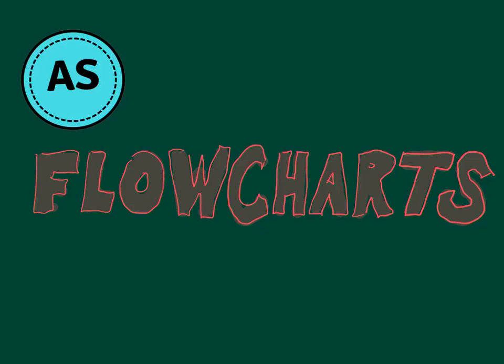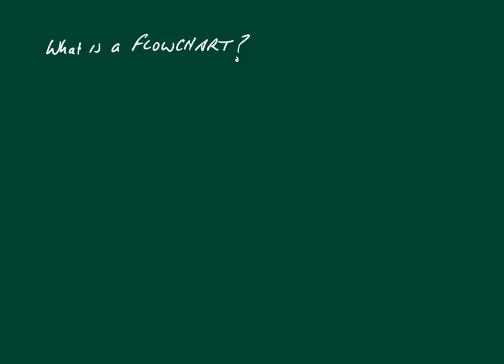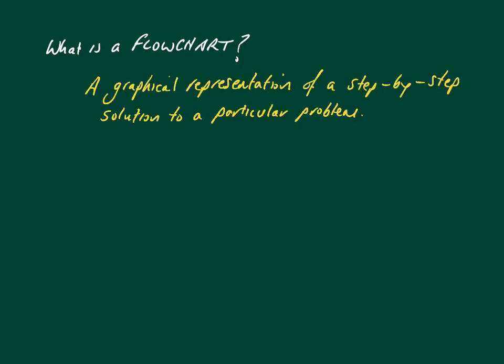In this video we're going to be looking at how to create and also unpick flowcharts, which is another method of program design. So what is a flowchart? Well, if you think about an algorithm as a step-by-step way of solving a problem, a graphical flowchart is a graphical representation of a step-by-step solution to that particular problem. It's like a graphical algorithm.